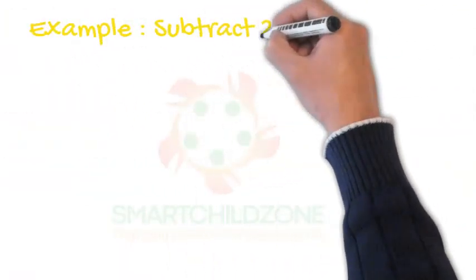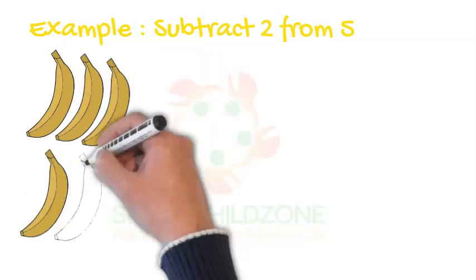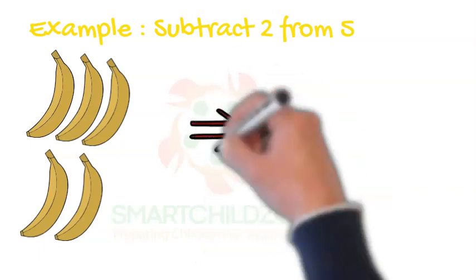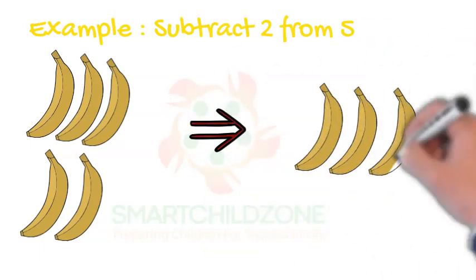Example: Subtract 2 from 5. There are 5 bananas here. If we take away 2 from here, 3 bananas will be left.